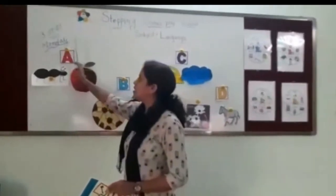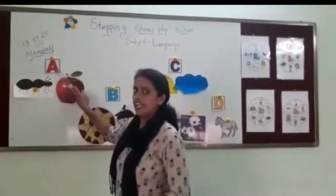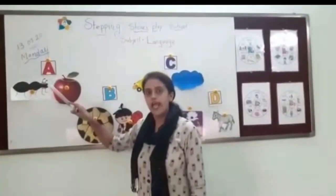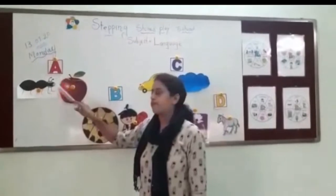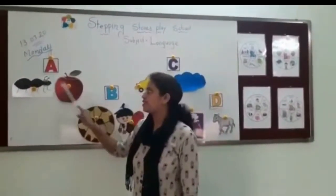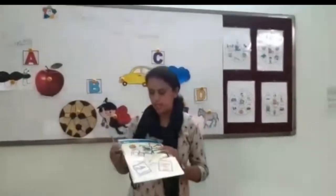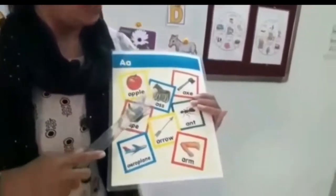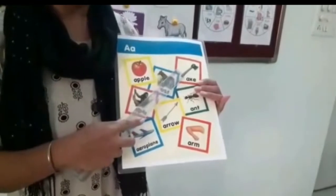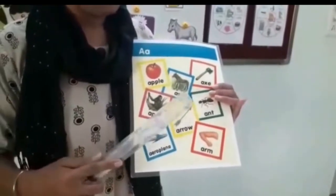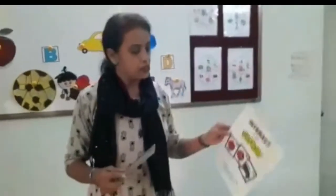Which letter is this, kids? This is A. And what is the sound of letter A? It is A. This is A. A for Ant, A for Apple, A for Air, A for Aeroplane, A for Arm. These are the objects of letter A.